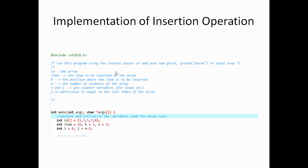Here we have the implementation of the insertion operation and these are the variables. LA is the array — it was declared as the array. Item is the item to be inserted, declared as integer item equals 10. K is the position where the item is to be inserted, and K is equal to 3. N is the number of elements of the array, which is 5. I and J are counter variables for loops — I represents the first index and J represents the last index.